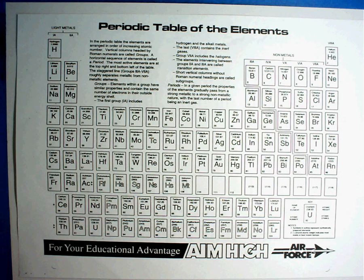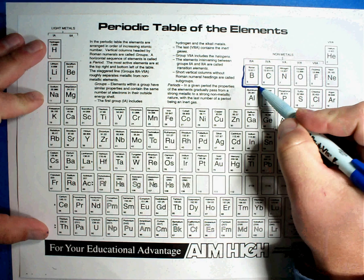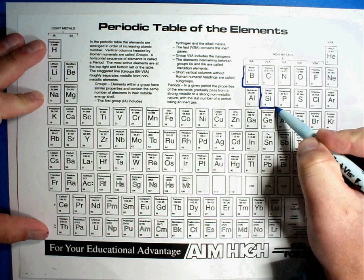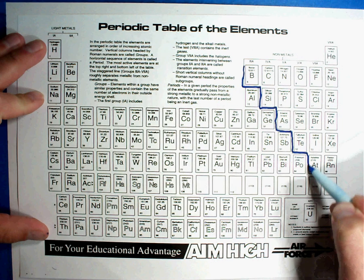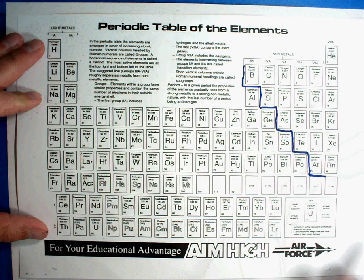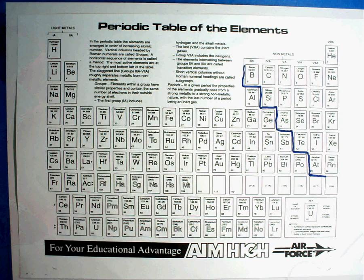The first thing you want to do is take your periodic table and darken this stair step that you will see on your periodic table. And if I get too far ahead of you, you may want to pause and do that first. But that stair step is very important and we'll talk about that in a minute.